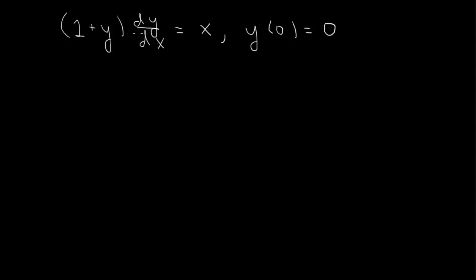to treat dy/dx like a fraction and put all the y's on one side of the equation and all the x's on the other. Here we can multiply by dx and write (1+y)dy = x dx. Now we've separated the variables so all the y's are on one side and all the x's are on the other.